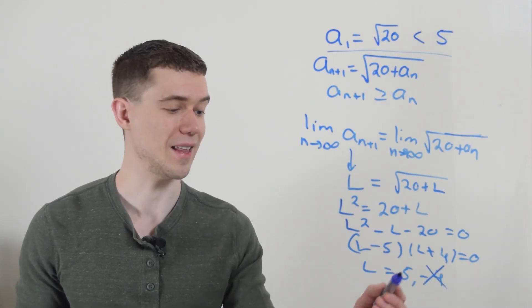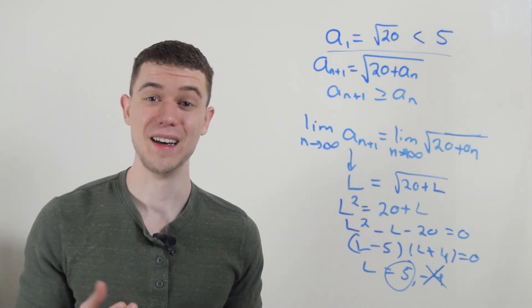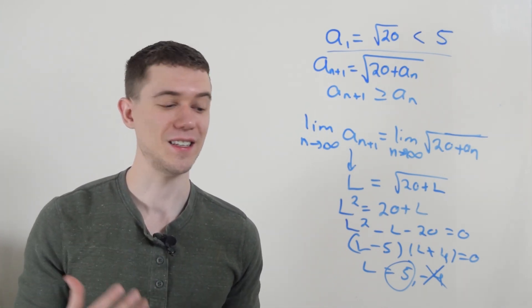Well, every term in the sequence was positive. So the limit definitely can't be negative four. Hey, that means the limit had better be five, which makes a lot of sense since we said it was bounded above by five. And the sequence is always increasing. That means at infinity, the sequence should be tending to that upper bound.